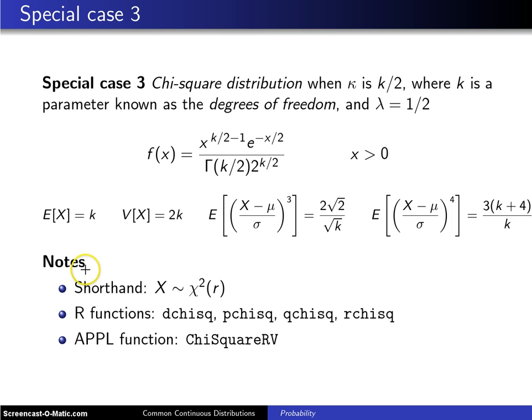The shorthand for the chi-square distribution is X is distributed as a chi-squared random variable with r degrees of freedom. We could have used k here instead of r, probably should have. And the R functions to calculate various quantities are dchisq, pchisq, qchisq, and rchisq. The APPL function is ChiSquareRV.